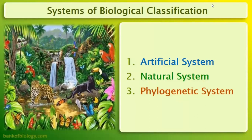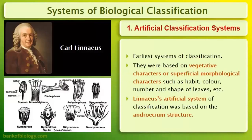First of all, let us come to the systems of biological classification. There are three systems: the artificial system, the natural system, and the phylogenetic system. The artificial system was the earliest classification system, based on vegetative characters or superficial morphological characters — things like habit, color, number, and shape of the leaf. Linnaeus's artificial classification system was based on the androcium structure.